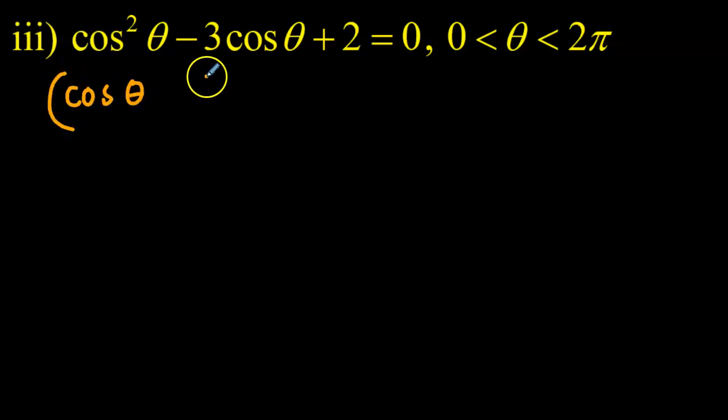So cosθ times cosθ would be equal to cos²θ, and then we need two numbers that multiply to 2. Well, that'd be 2 and 1. But since it should add up to negative 3, I guess both of these are negative. So I've got (cosθ - 1)(cosθ - 2). Double check. Cos²θ minus 2 minus 1 is minus 3. Minus 1 times negative 2 is plus 2. Perfect.